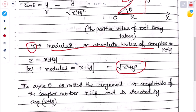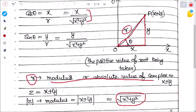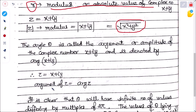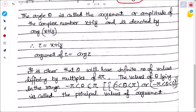The angle θ that r makes with the x-axis — that is, the angle the line from the origin to the complex number makes with the real axis — is called the argument or amplitude of the complex number x + iy. It is denoted arg(x + iy) or arg(z).